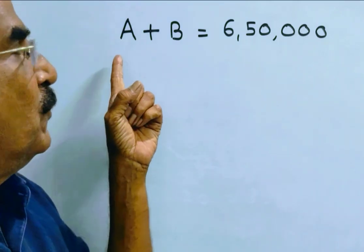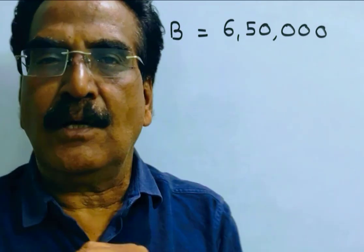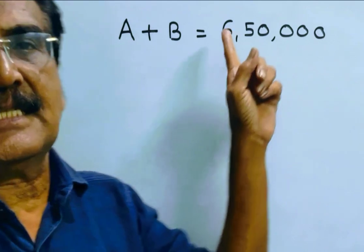See friends, the total cost price of 2 cars A and B is 6,50,000.